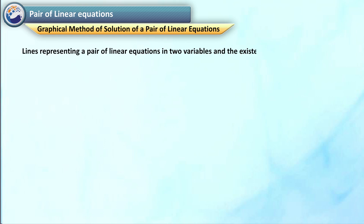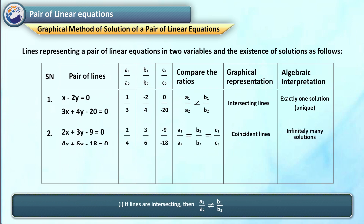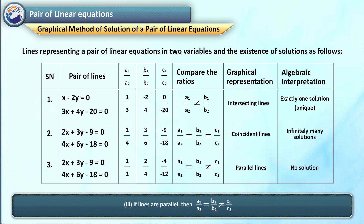Graphical method of solution of a pair of linear equations. Lines representing a pair of linear equations in two variables and the existence of solutions are as follows. If lines are intersecting, then a1 upon a2 is not equal to b1 upon b2. If lines are coincident, then a1 upon a2 is equal to b1 upon b2 is equal to c1 upon c2. If lines are parallel, then a1 upon a2 is equal to b1 upon b2 but not equal to c1 upon c2.